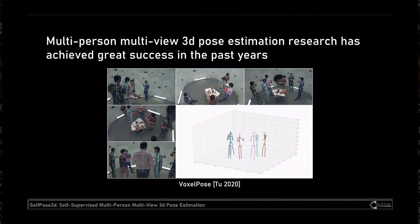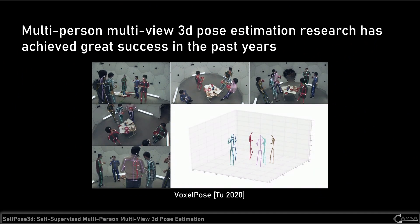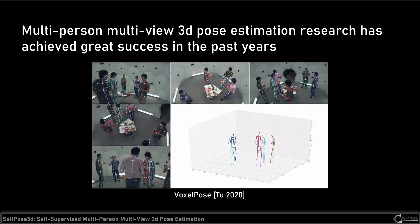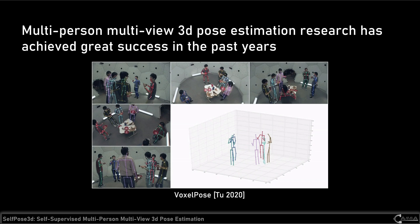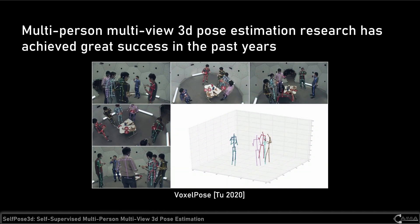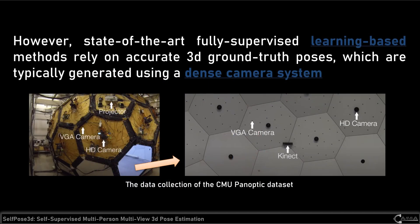The current state-of-the-art learning-based methods for multi-view multi-person 3D pose estimation have achieved great success on public datasets in the past years. However, these methods are mostly fully supervised, relying on accurate 3D ground truth poses, which are typically generated using a dense camera system.